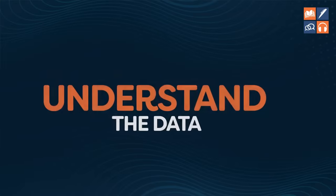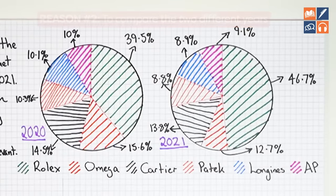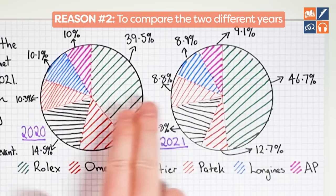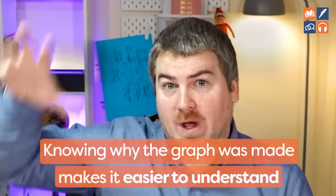The most important thing you need to do is understand the data. There's one question to ask yourself in order to fully understand the data very quickly — remember, we only have 20 minutes to write this. That question is: what is the purpose of this data? Why did they make this chart? This data was made by Morgan Stanley Bank for two reasons: number one, to compare the six different Swiss brands; and number two, to compare the two different years, 2020 and 2021. Once you think about it this way, it gives you laser focus and helps you write your response.